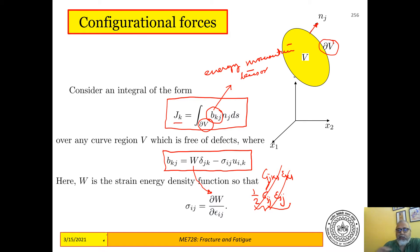So now let us try to evaluate this integral given that this is the definition of B_kj, this is the definition of W, and the volume is free of any defects. So that is what we are going to do. Now let us first calculate B_kj,j. Let us first calculate this quantity. And this quantity of course is W delta_jk minus sigma_ij u_i,kj.